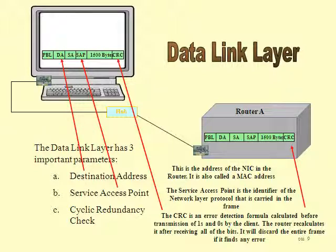After the data is transferred over to the router, it's going to calculate the same figure over the DA, the SA, the SAP, and the 1,500 bytes. It'll add up all that, check the answer with the CRC, and if there are any errors it won't get a good result and will discard the entire frame. So the key thing the data link layer protocol does is transfer data across cables, modems, or wireless connections and check for errors at the other end.